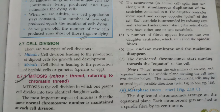Note: poles mean the extremities of an axis, and equator means the middle plane dividing the cell into two similar halves. The naturally occurring cells may be oriented in all possible directions. Metaphase — 'meta' means after. The duplicated chromosomes arrange on the equatorial plane, and each chromosome gets attached to a spindle fiber by its centromere.